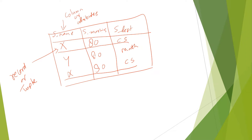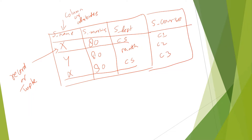Let's say I add student course here. This is C1 course, this is C2, this is C3. If you add this additional column, now we can identify the record uniquely. I have student X with 80 marks, computer science, but the course is different — C3. That is the power of the key. A key is something which will help us to uniquely identify the record. Let's understand these keys one by one.